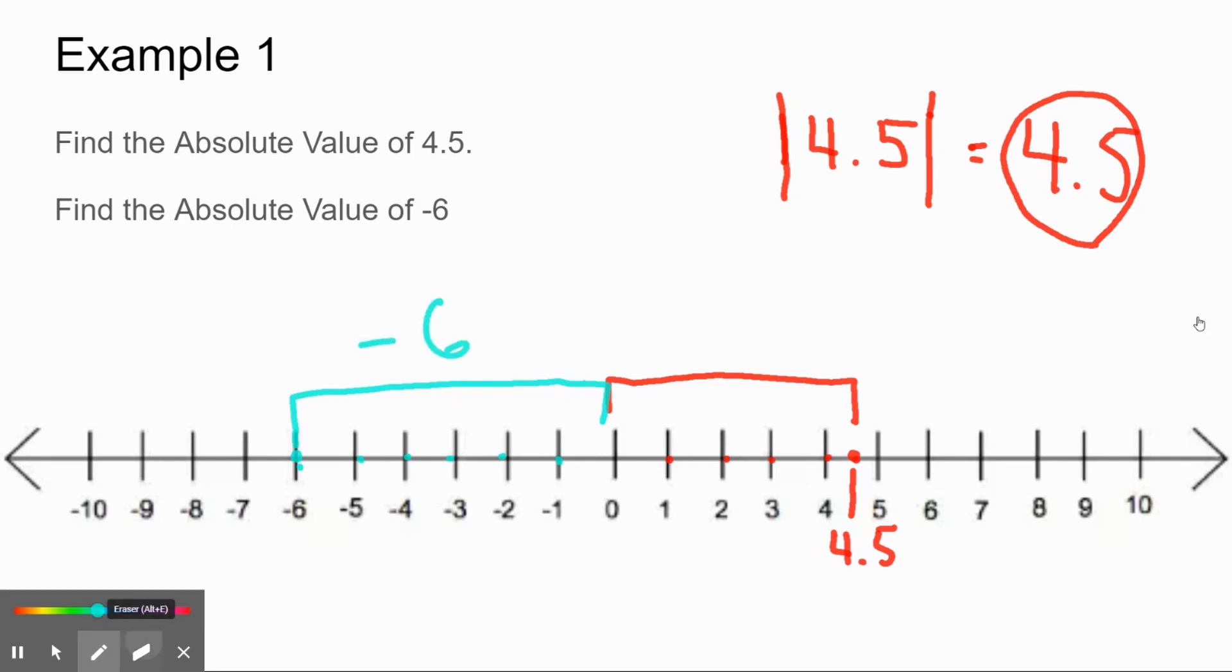Distances are always positive, so even though we're going in the negative direction, the absolute value of negative 6 is just going to be positive 6 because it is a distance. Let's look at another example.